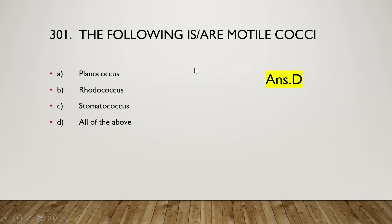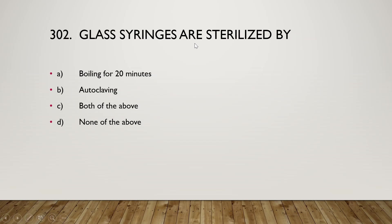The next question is: glass syringes are sterilized by boiling for 20 minutes, autoclaving, both of the above, or none of the above. The right answer is option C — both of the above. Boiling for 20 minutes and autoclaving are used for sterilization of glass syringes.